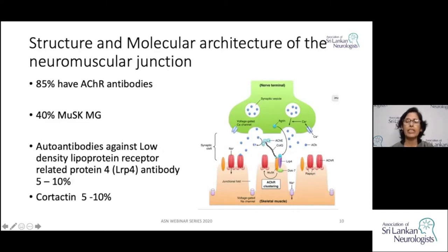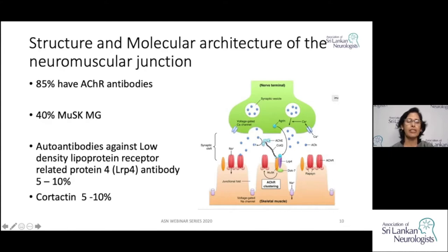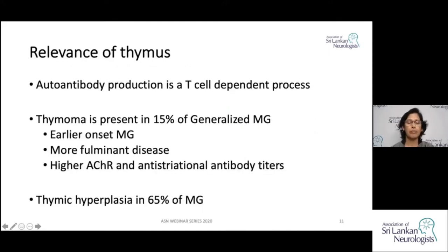In Myasthenia Gravis, antibodies have been demonstrated: in 85% of patients there are acetylcholine receptor antibodies. In the remaining seronegative patients, about 40% have antibodies against MuSK receptors, and another 5 to 10% have LRP4 antibodies. There are also cortactin antibodies found in 5 to 10% of patients.